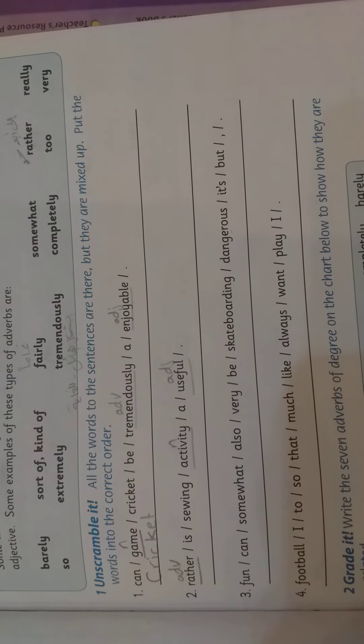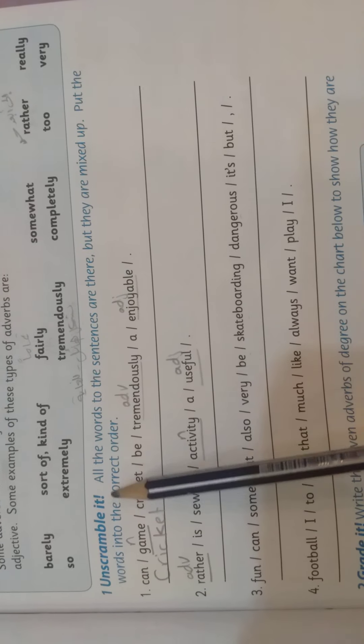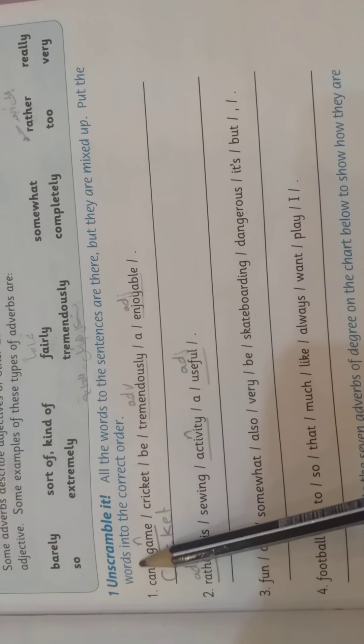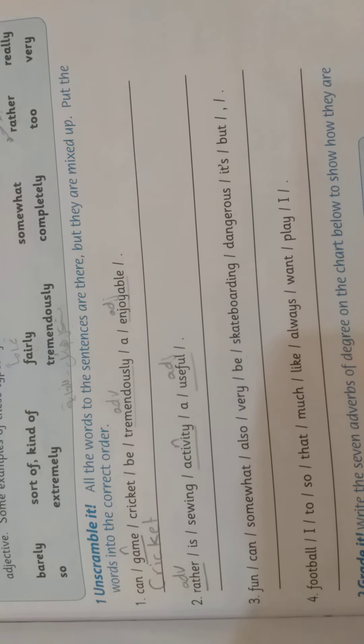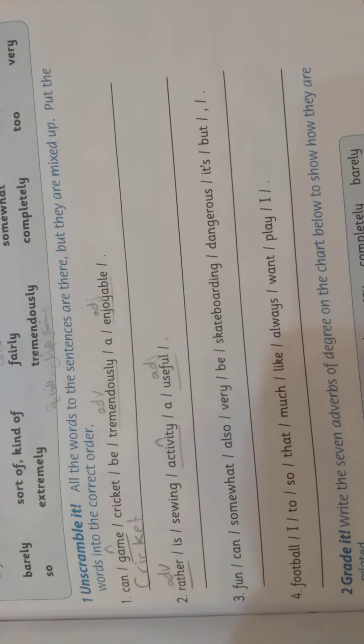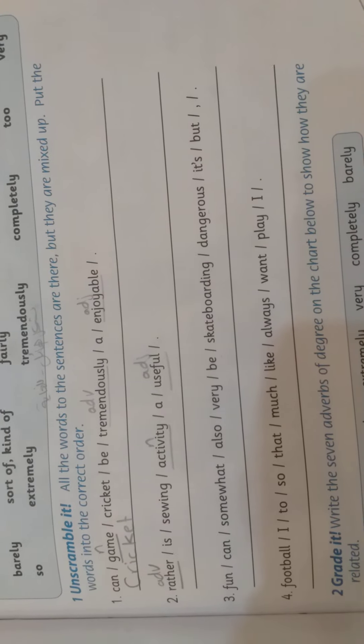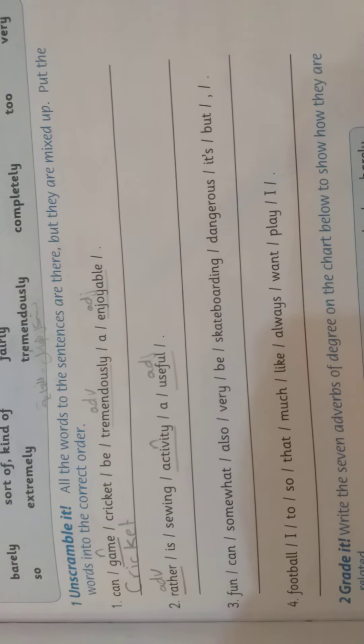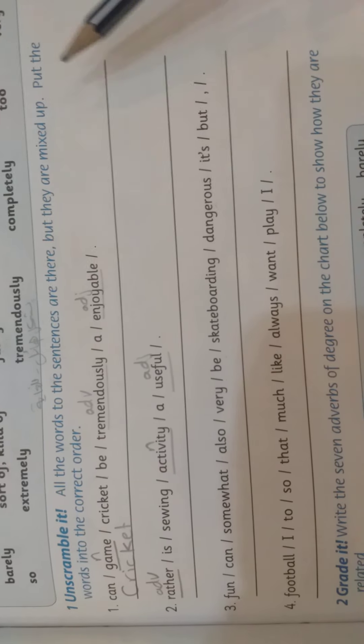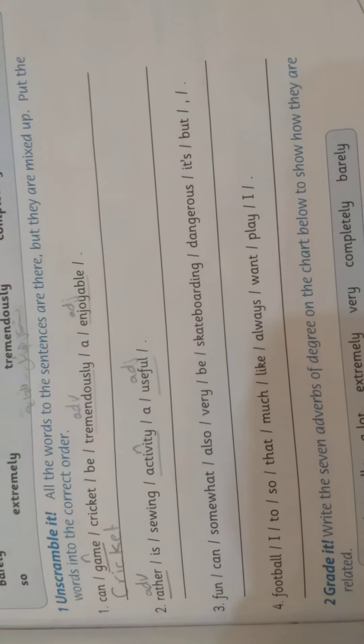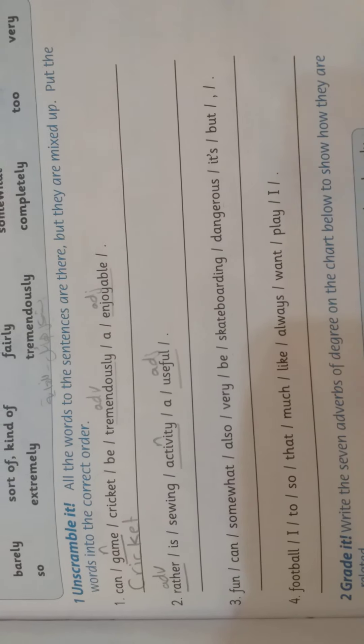Now, move to question number one. Let's read the question. Unscramble it. All the words to the sentences are there, but they are mixed up. Put the words into the correct order. In this question, we have four sentences. These sentences are mixed up. After that, you complete the sentence.